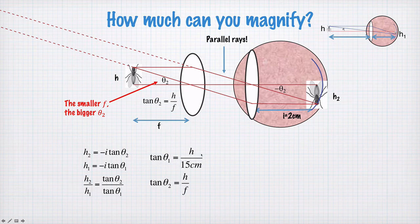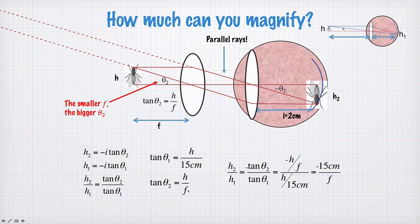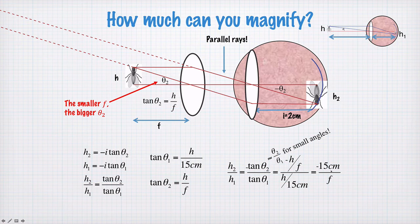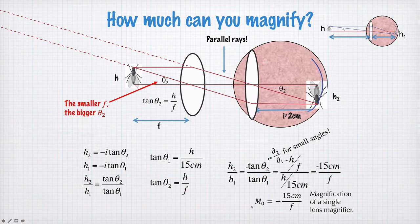So tan theta1, remember, was h on 15cm. Tan theta2 is h on f. So the ratio of h2 to h1 is negative tan theta2 on tan theta1. Substituting in all the expressions for this, and we get that h2 on h1 is negative 15cm on f. And 15cm comes from the closest you can position something to your eye and still focus on it. Now for small angles, this is equal to theta2 on theta1. And we define the magnification of your magnifying glass as negative 15cm on f.